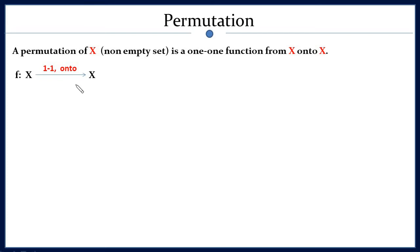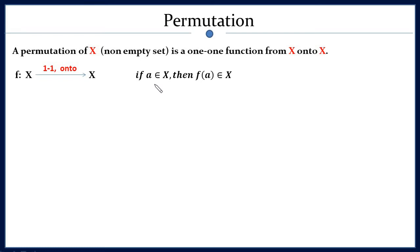The onto condition means: for every element in X, for any arbitrary element a in set X, there must exist f(a) and this f(a) must be a member of X. For the one-one condition, if we consider any two arbitrary elements a and b in X, then f(a) should not be the same as f(b). That is, all elements of set X must have a unique image in X under this function.